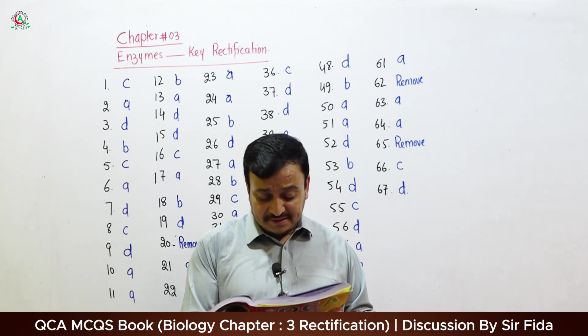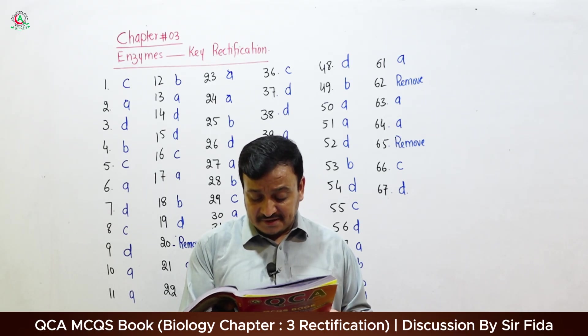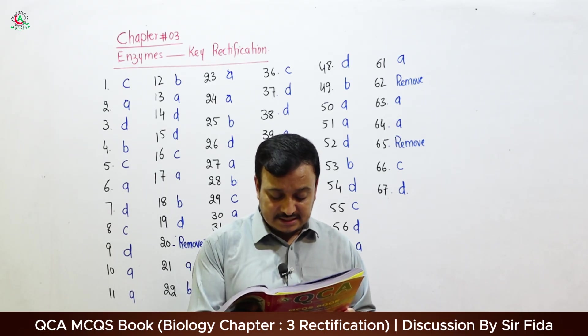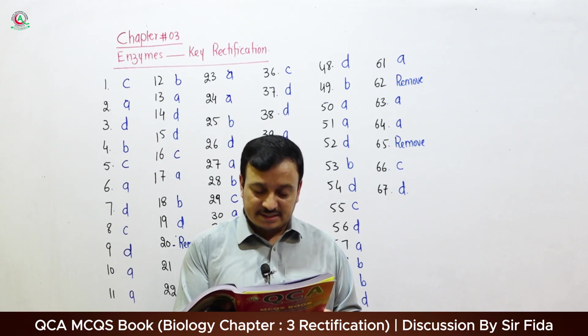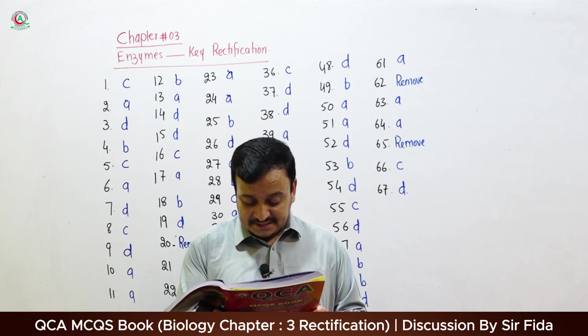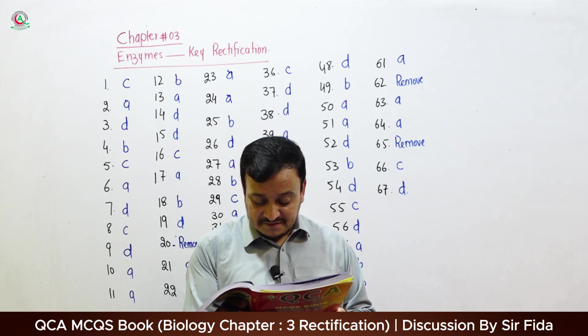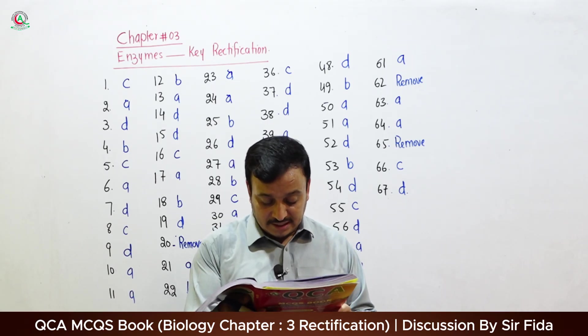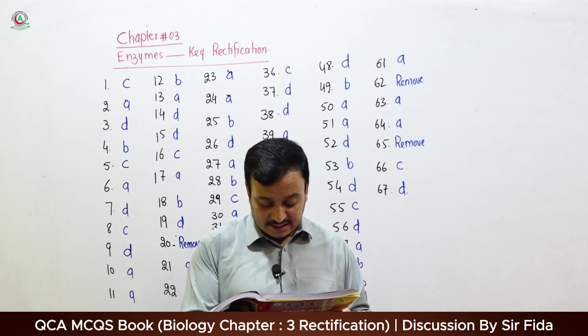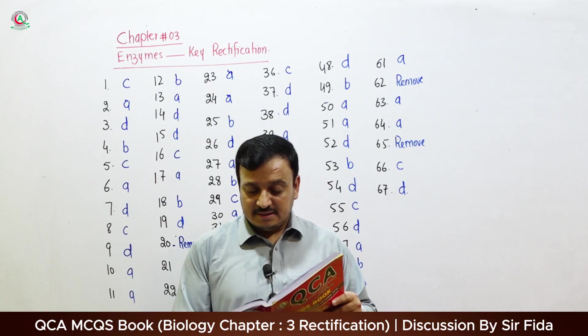Question 53: Enzymes of the arctic snow flea work in — correct answer B: minus 10 degrees centigrade. Question 54: All of the following enzymes belong to hydrolase except — DNA ligase. Question 55: All of the following are oxidoreductase except — correct answer C: Mutase. Question 56: Which one of the following belongs to ligase? Correct answer D: RNA ligase.